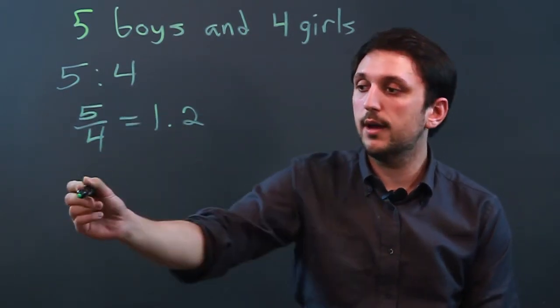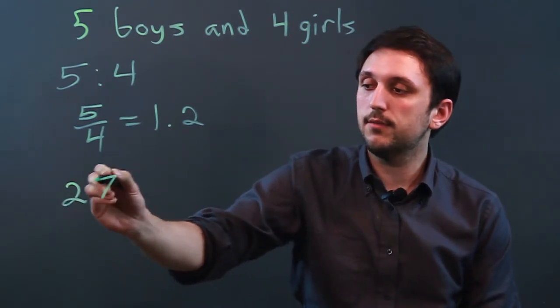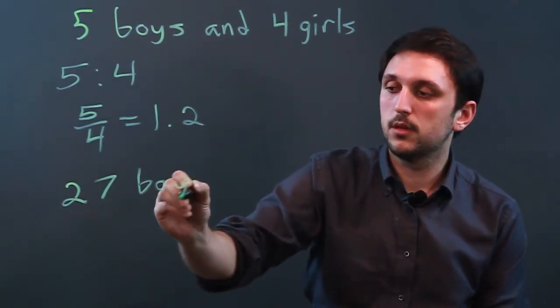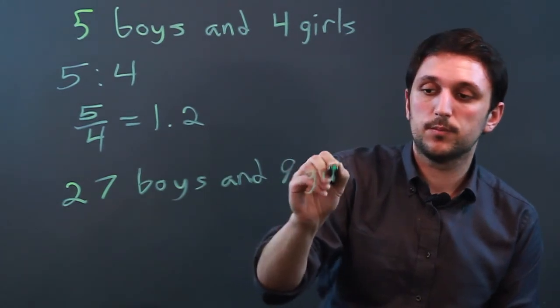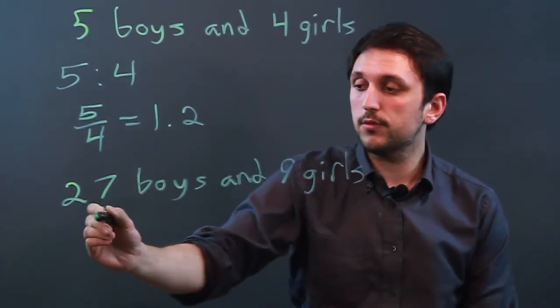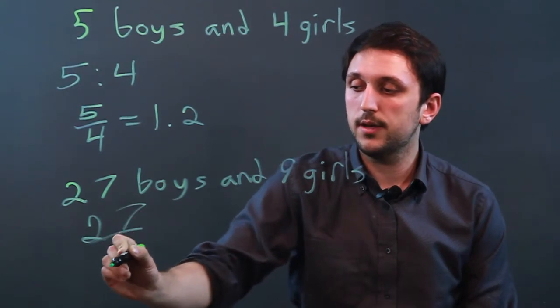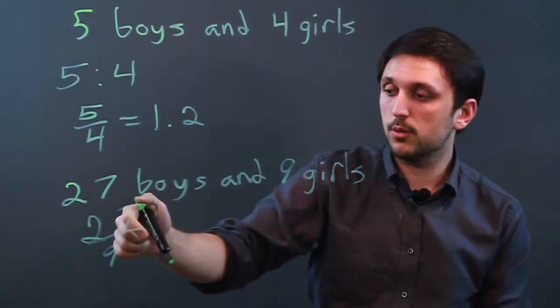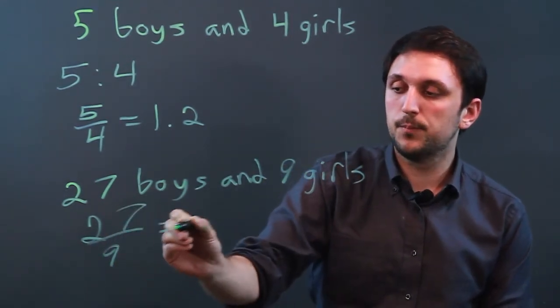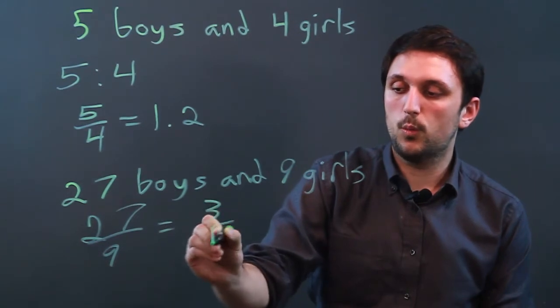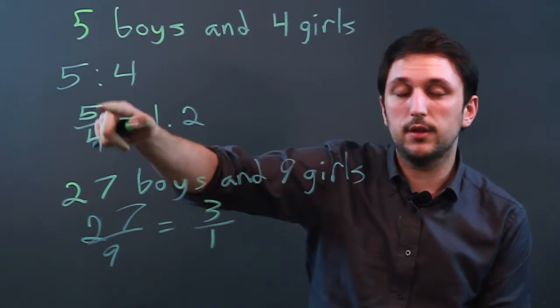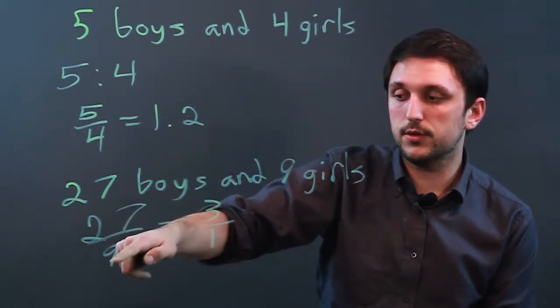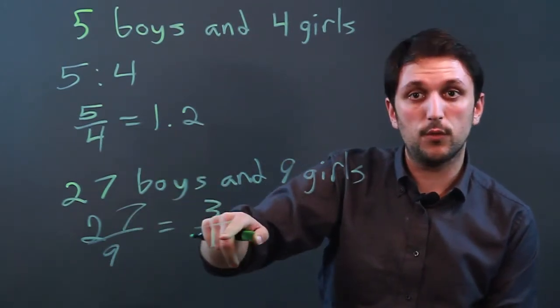Now, if you have a larger amount, say you have 27 boys and 9 girls, you can say 27 over 9, but these are like terms. They can be simplified down to 3 over 1. So when you have a ratio, you have to make sure that it is indivisible. If it's 27 to 9, you're probably going to say 3 over 1.